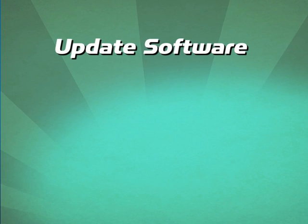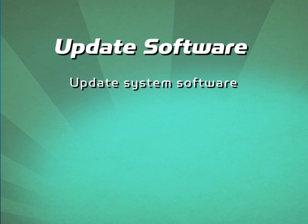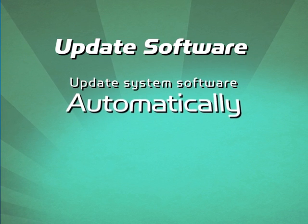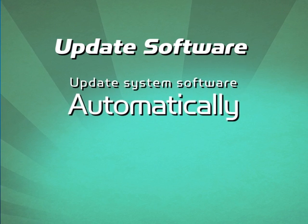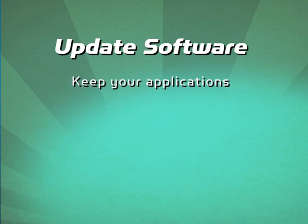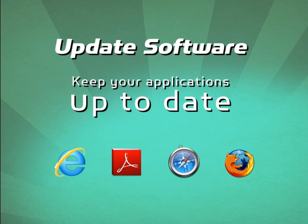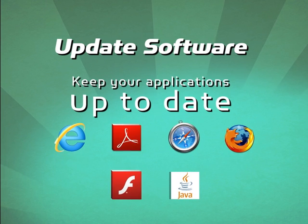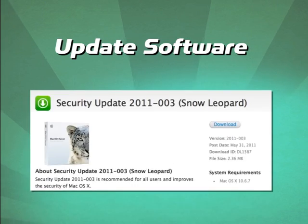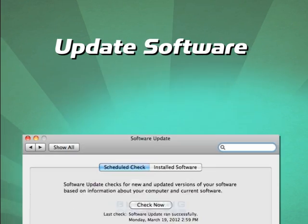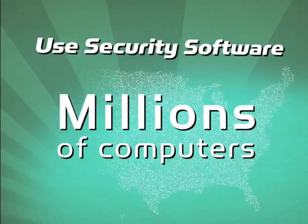One of the most important steps you can take is to keep your software up-to-date, so configure your computer to update the system software automatically. Keep your applications up-to-date, especially web browsers and PDF viewers. Don't forget about browser plugins like Flash and Java — they need to be updated regularly. Keeping your software up-to-date will make it harder for hackers to break into your computer.